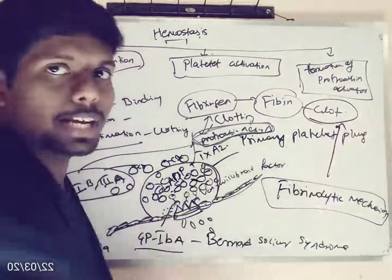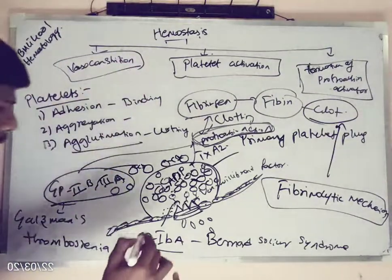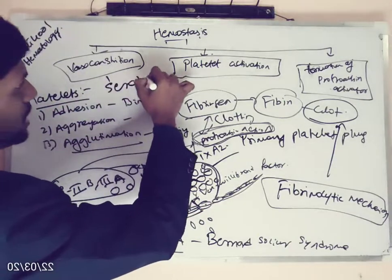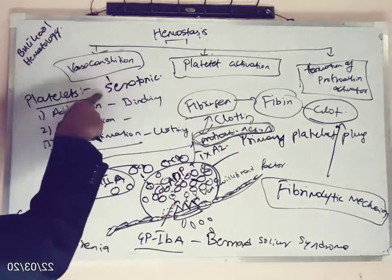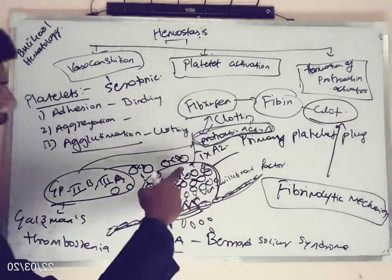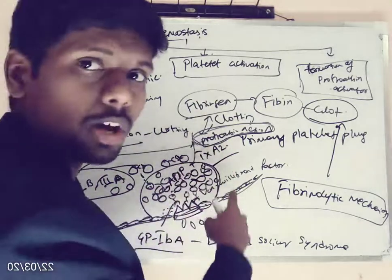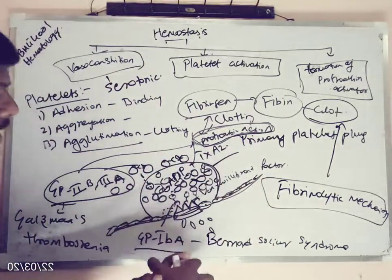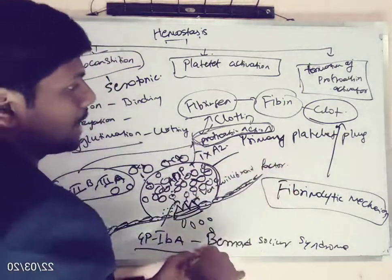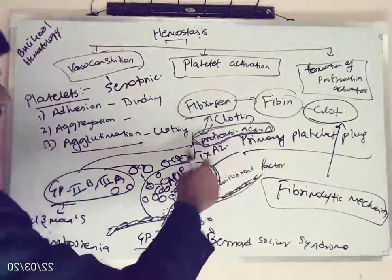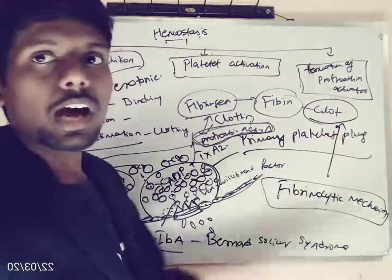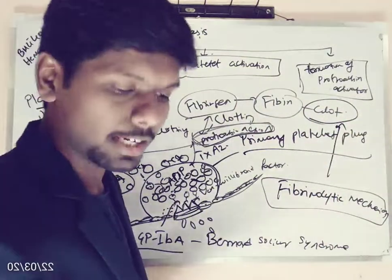In hemostasis: first, vasoconstriction is mediated by serotonin released by activated platelets — serotonin will decrease the size of the blood vessel. After that, platelets will start secreting ADP and thromboxane A2. In the presence of ADP and thromboxane A2, many platelets will start aggregating at the site of injury with the help of receptor 2B3A, forming a primary platelet plug. Then they will synthesize prothrombin activator, which converts fibrinogen to fibrin and clots the blood. These clots are then removed by the fibrinolytic mechanism.